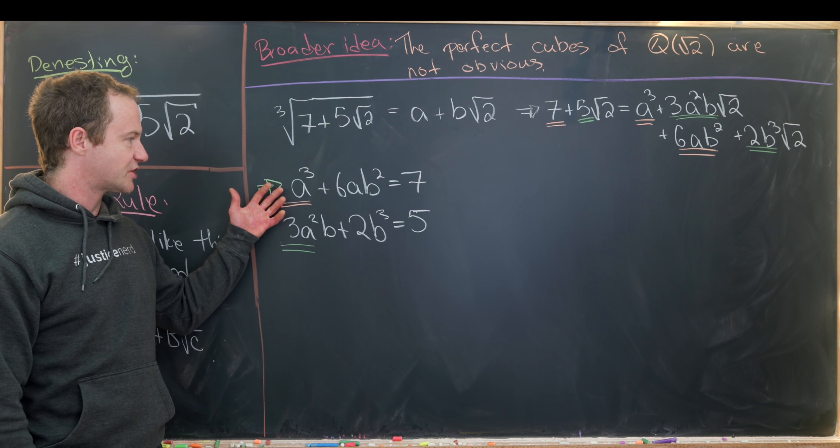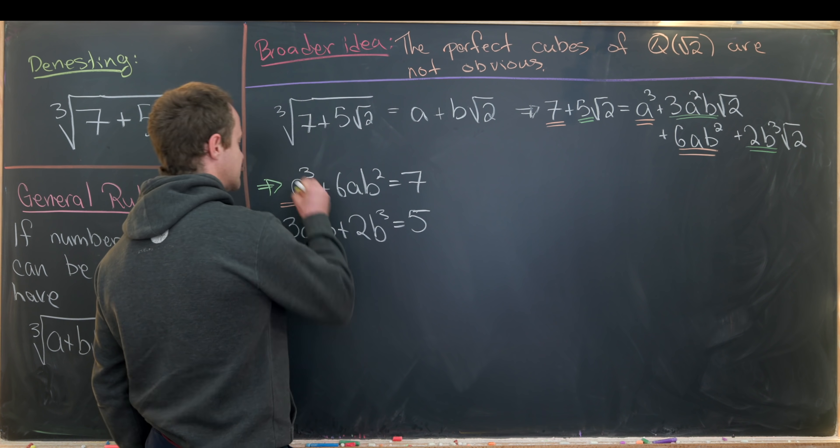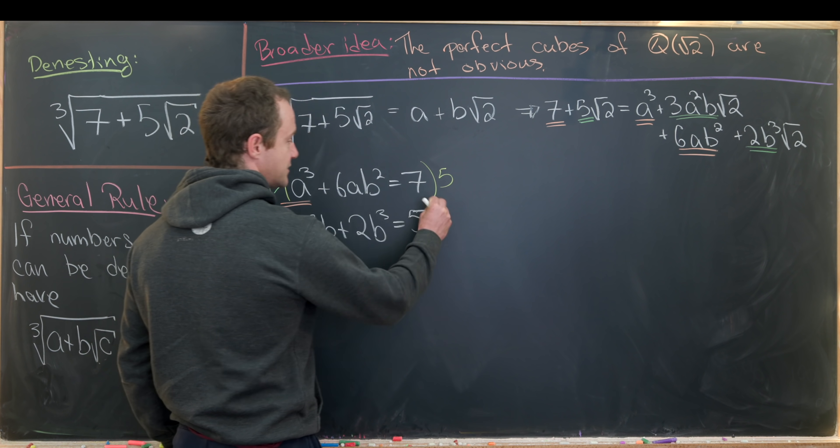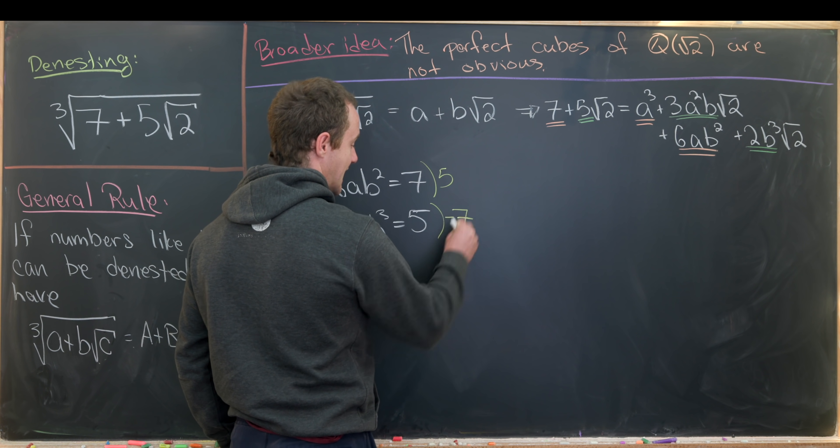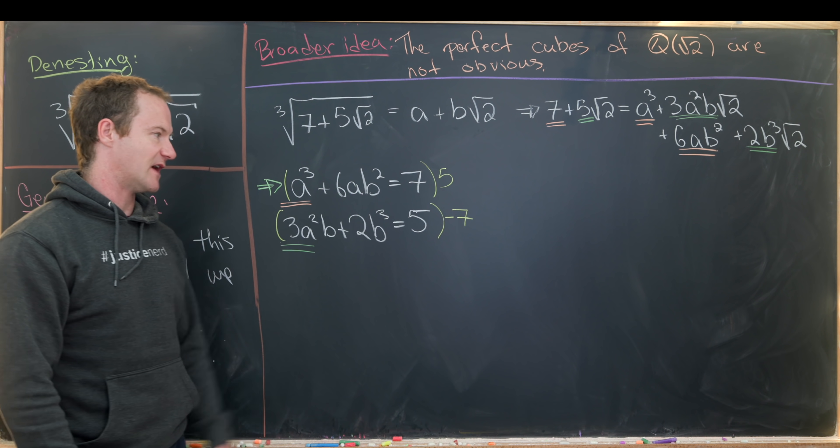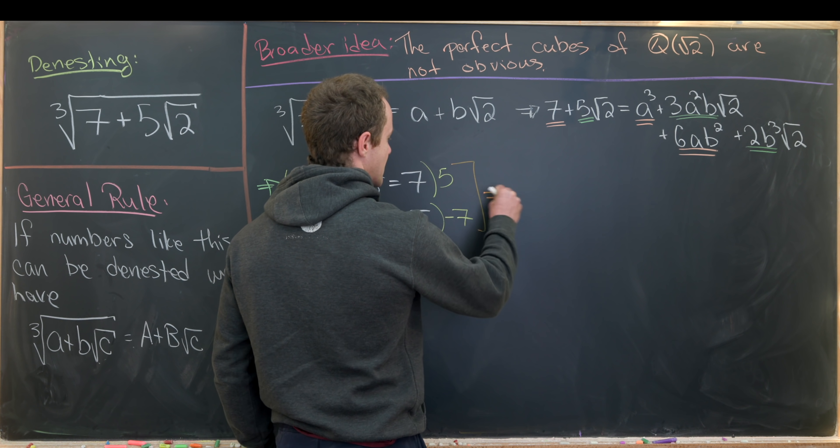But now what I'd like to do is turn these into a single equation and I can do that by multiplying this first one by five and then multiplying this next one by negative seven and then adding them. Or maybe just multiplying by five and then multiplying by seven and then subtracting. So let's see what that leaves us with.